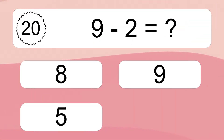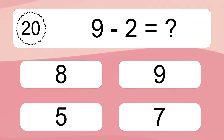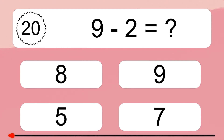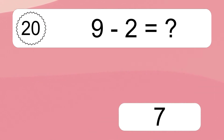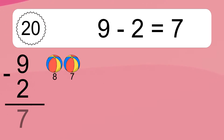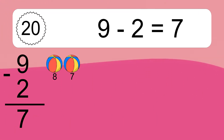9 minus 2 equals what? 9 minus 2 equals 7. Let's count it: 8, 7.